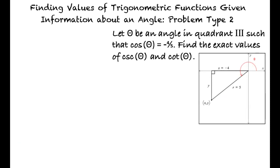Consider the following example. Let theta be an angle in quadrant 3 such that the cosine of theta equals negative 4 fifths. Find the exact values of cosecant of theta and cotangent of theta.